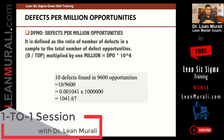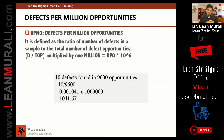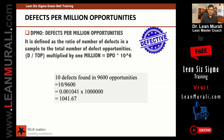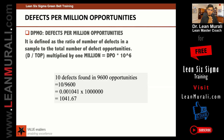That is the difference between parts per million and DPMO. Parts per million is based on the number of defective products, whereas DPMO is based on opportunities. I explained the difference between defects and defective.